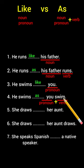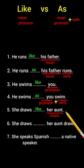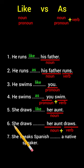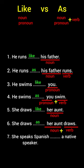She draws ___ her aunt. Her aunt is a noun, so she draws like her aunt. She draws ___ her aunt draws. Her aunt is a noun plus draws is a verb, so we use as: she draws as her aunt draws.